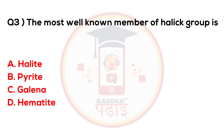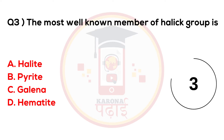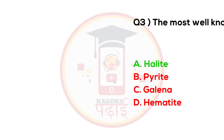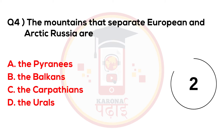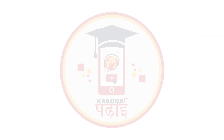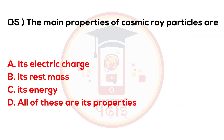The most well-known member of the Helix group is light. The mountains that separate European and Arctic Russia are the Urals. The main properties of cosmic ray particles are all of these.